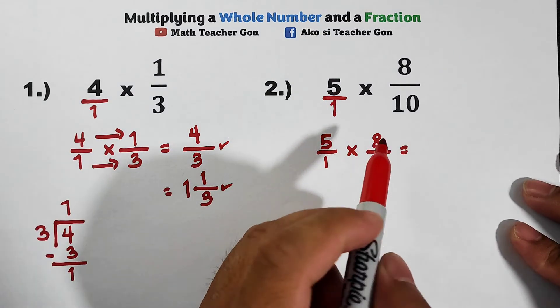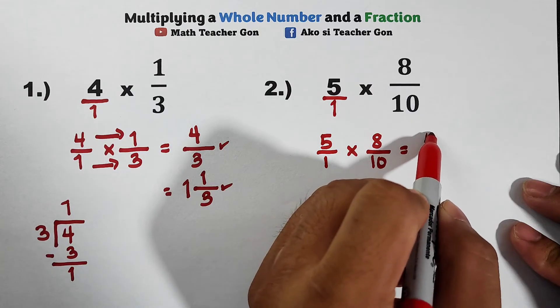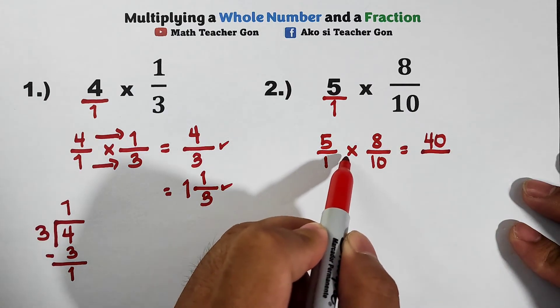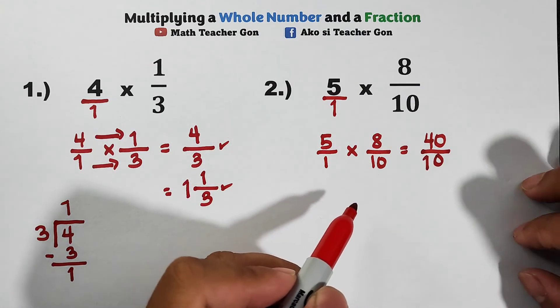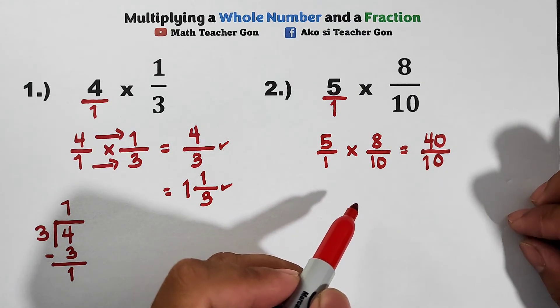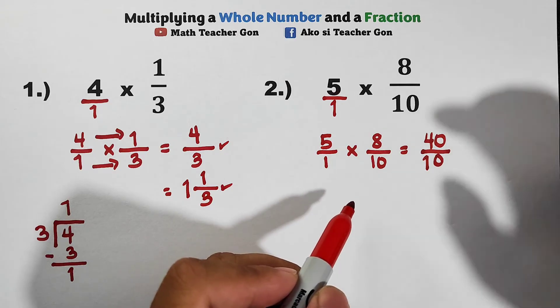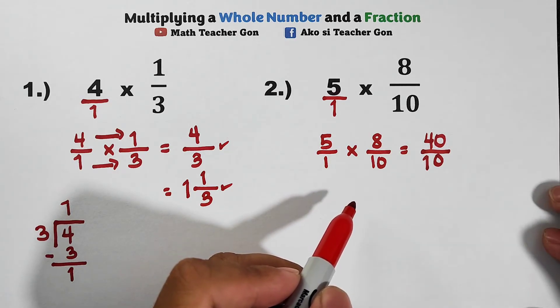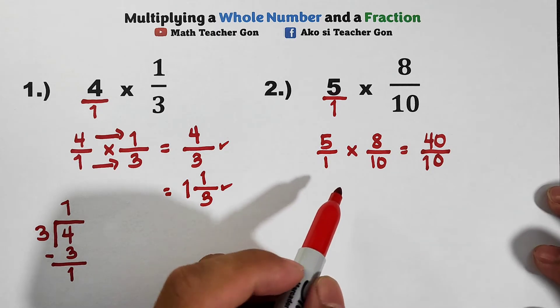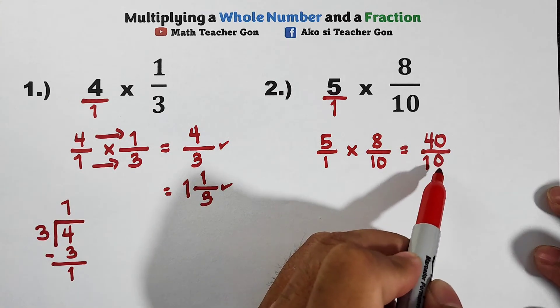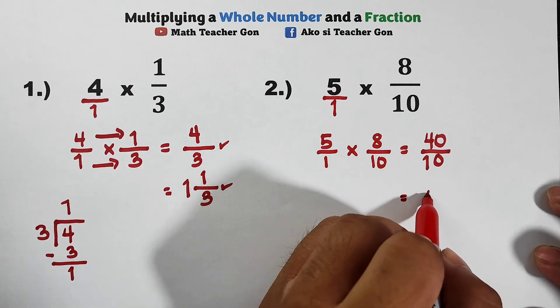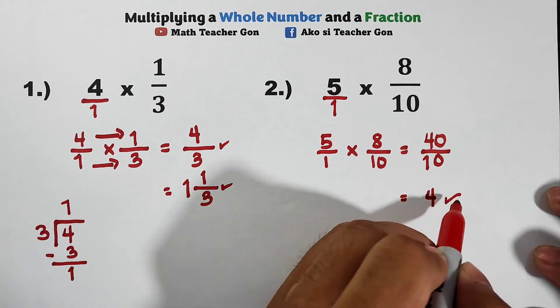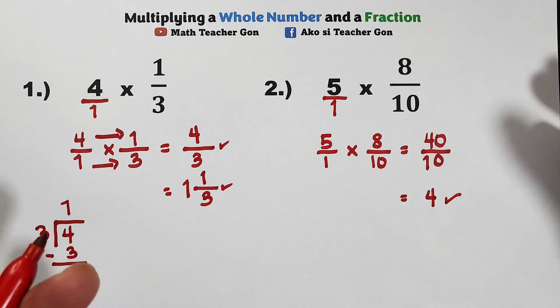5 times 8 equals 40, over 1 times 10 which equals 10. As you can see, this fraction is an improper fraction, but we can still simplify this. We have 40/10, we can divide this. 40 divided by 10 is simply 4, and this is the final answer.